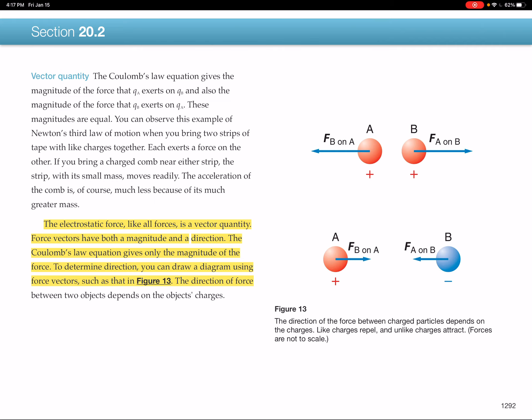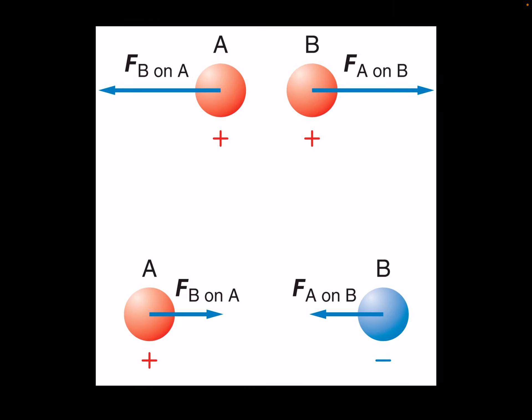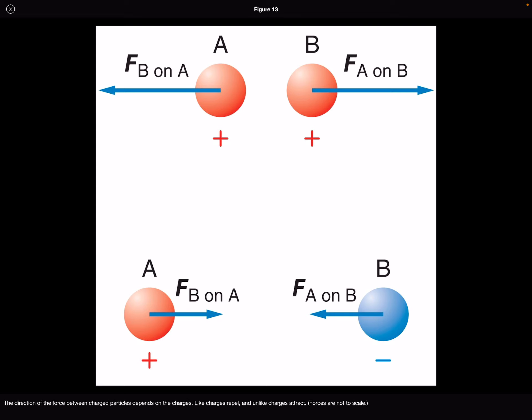In figure 13, you can see there's charge A and B on the top. These are both positive charges. In this case, it's a repulsive force. So the force of charge A acting on B goes to the right. The force of charge B acting on A goes to the left.